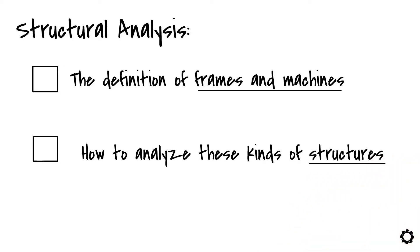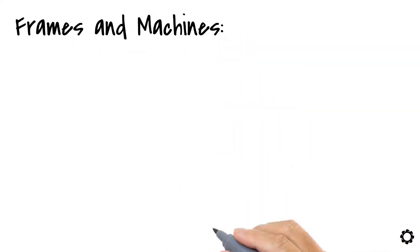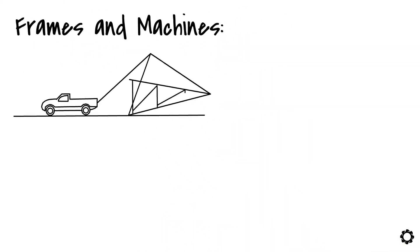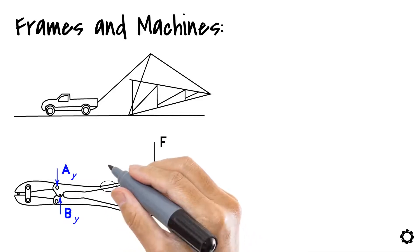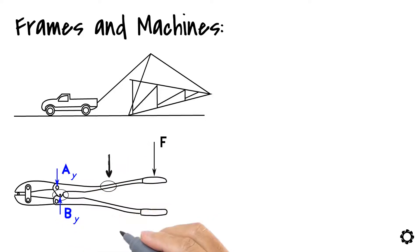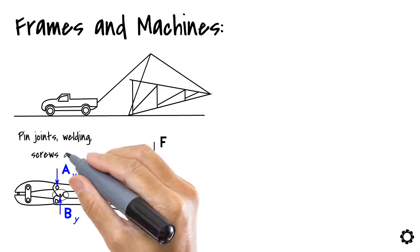So what kind of structures are we usually referring to when we are speaking of frames and machines? Commonly speaking, frames and machines are structures which are composed of multiple members of which at least one is a multi-force member that is subjected to more than two forces. These members are usually connected together by pin joints, welding, screws, etc.